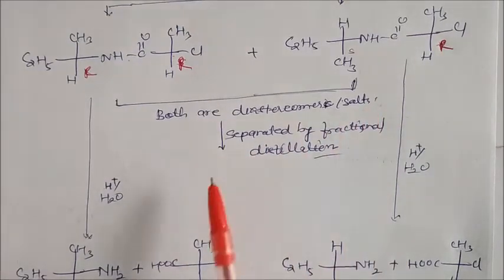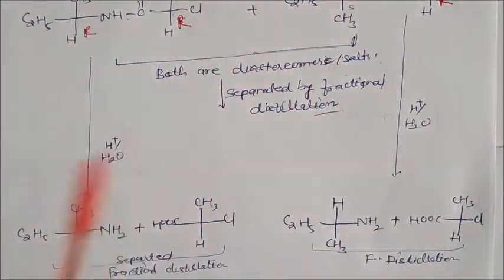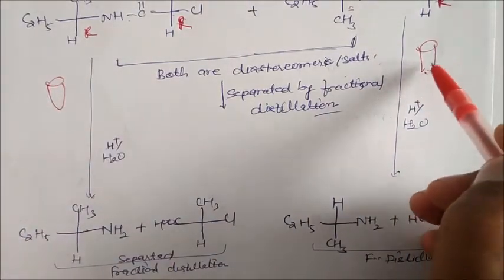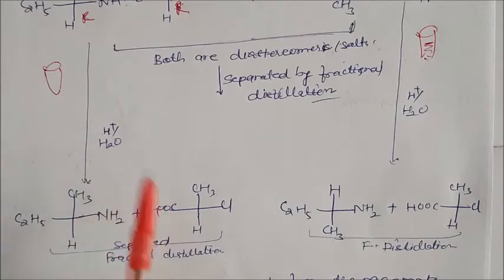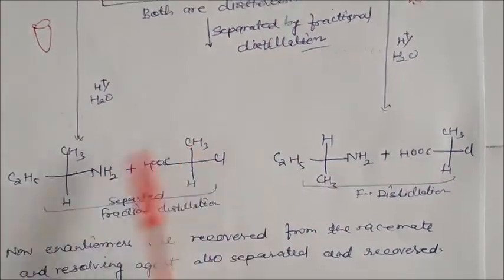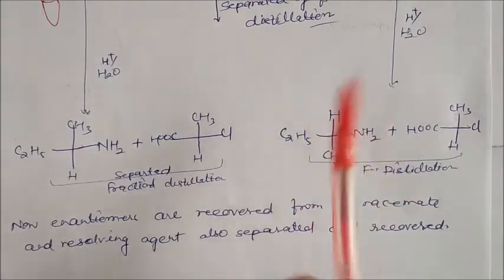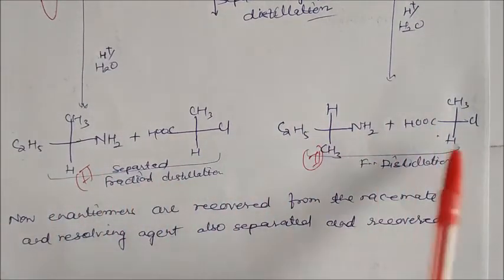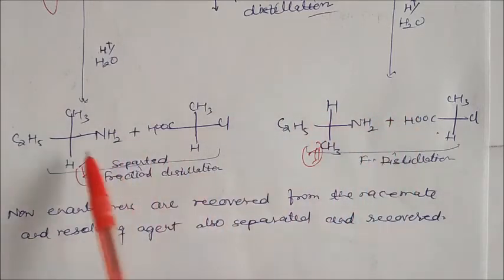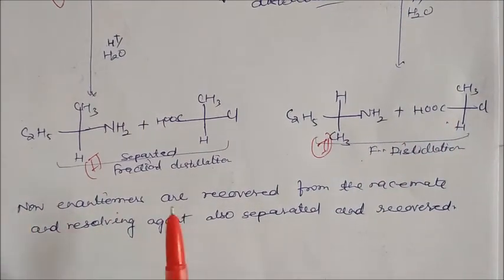Now we can separate these diastereomeric salts. After separation, we can separate these two salts by fractional distillation. Take these salts in different test tubes, and give acidic hydrolysis using HCl and water — these two will get separated. After separation, you will get enantiomer 1 and the resolving reagent recovered; and separately, enantiomer 2 and the resolving reagent again recovered. In this way, after hydrolysis you get two different enantiomers — the two pure enantiomers are recovered from the racemate, and the resolving reagent is also separated and recovered.